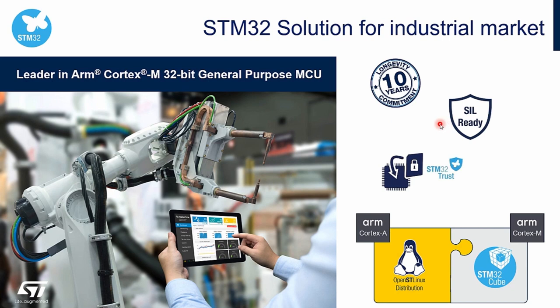Functional safety features like flash or RAM error code correction, watchdogs, PWM protections, and many others enable use of STM32 in safety-critical applications. A safety manual is available for each STM32 series. In addition, a security framework, STM32 Trust, helps you protect your assets and meet the requirements of your security assurance level. A consistent and comprehensive software solution is offered with STM32 Cube for all STM32, complemented by the OpenST Linux distribution for Cortex-A in STM32 MP1 microprocessor products.